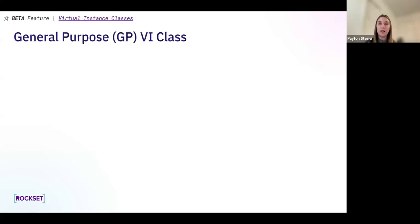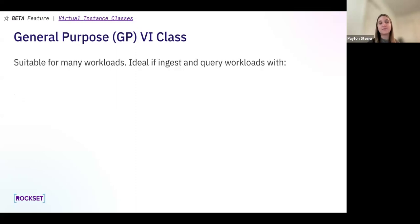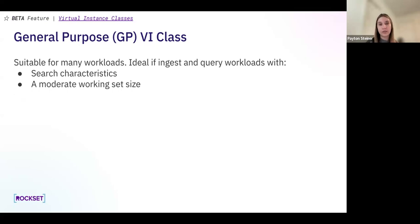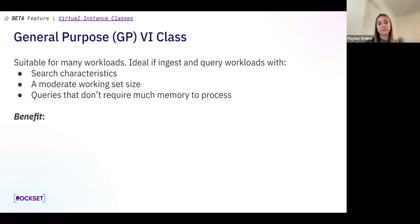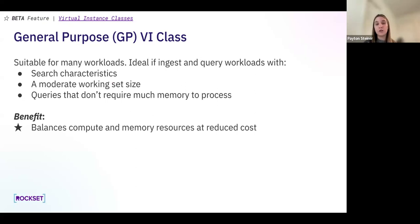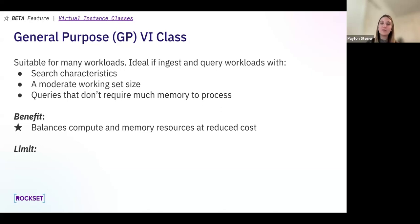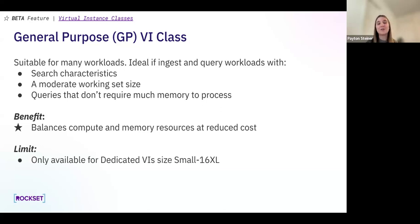The general purpose VI class is our new class — note that this is a beta feature, subject to some change. It's suitable for many workloads, especially ideal for ingest and query workloads with search characteristics, a moderate working set size, and queries that don't require much memory to process. The benefit is that it balances compute and memory resources at a reduced cost. You get the same compute resources as memory optimized but reduced memory, saving cost on memory you don't need. It's currently only available for dedicated VIs ranging from size small to 16XL.